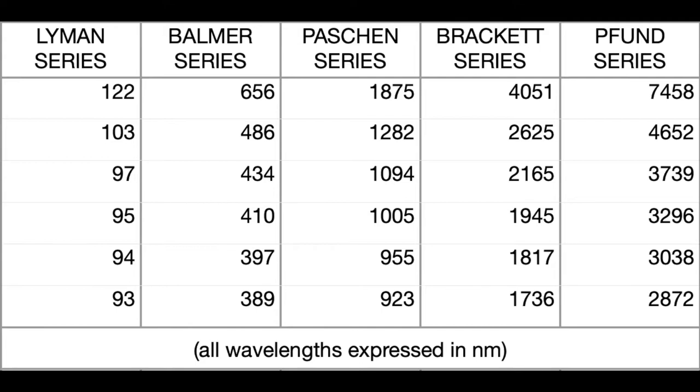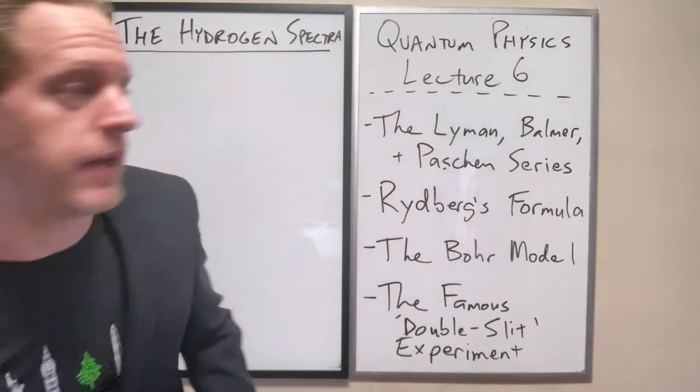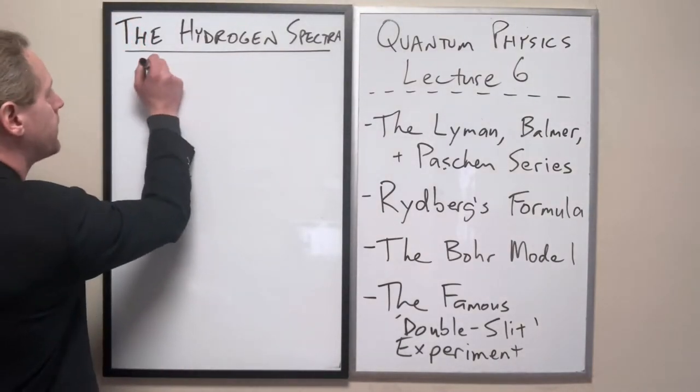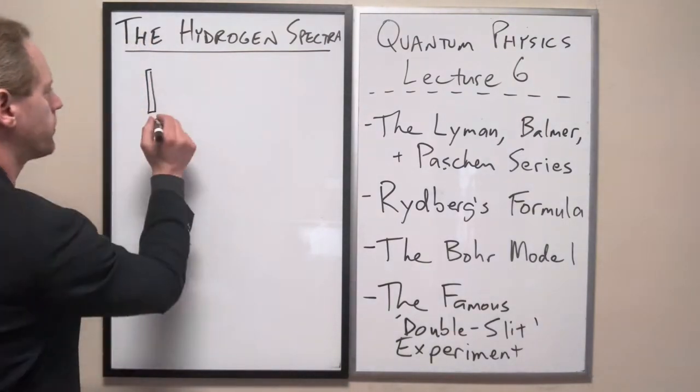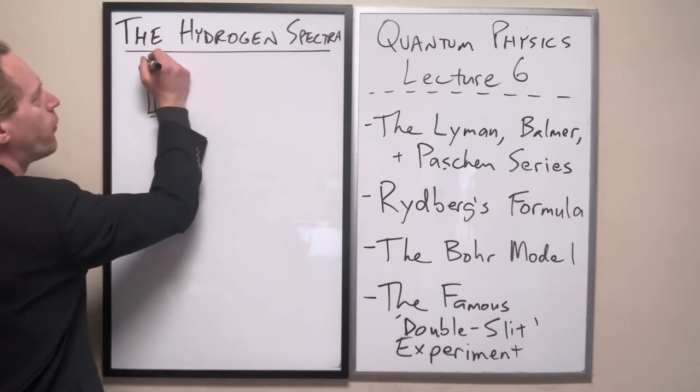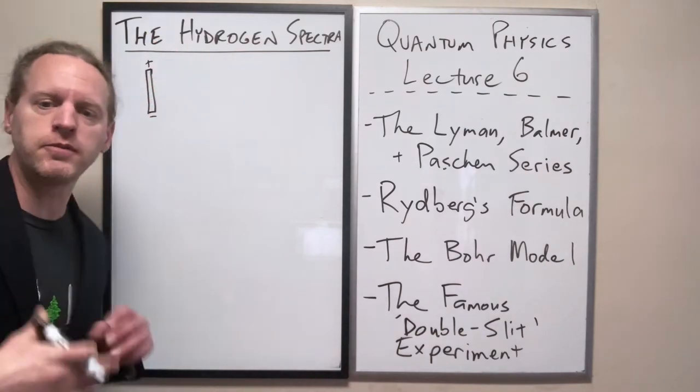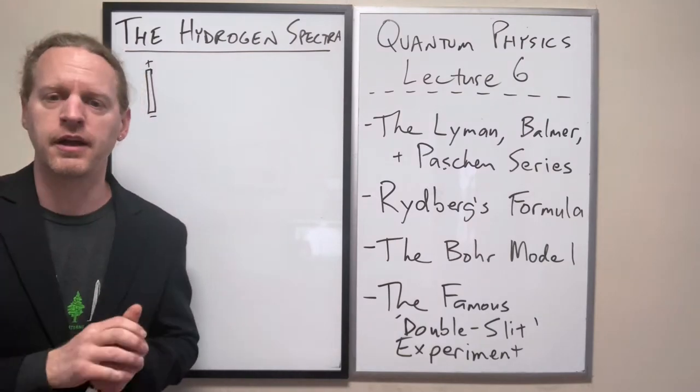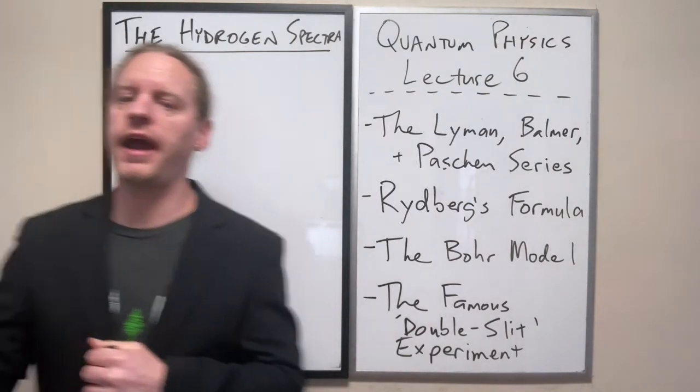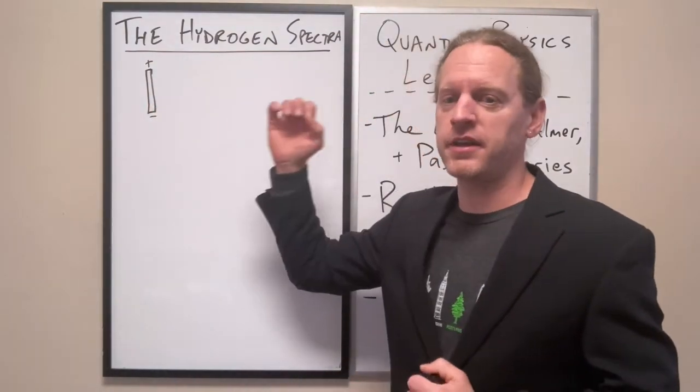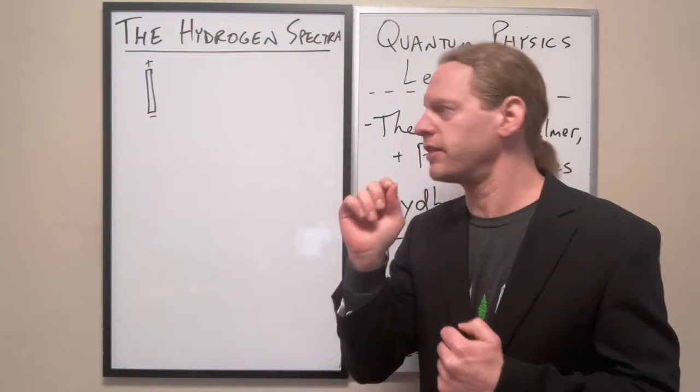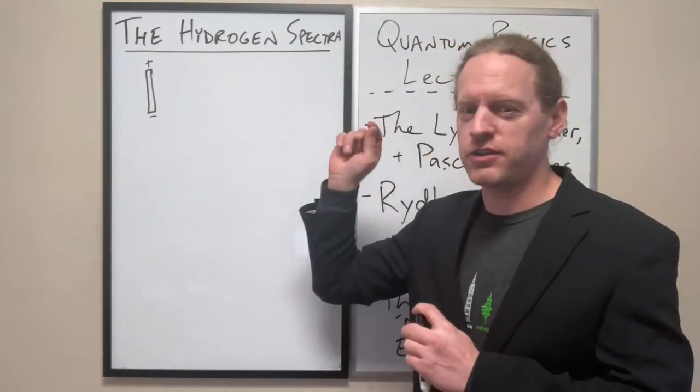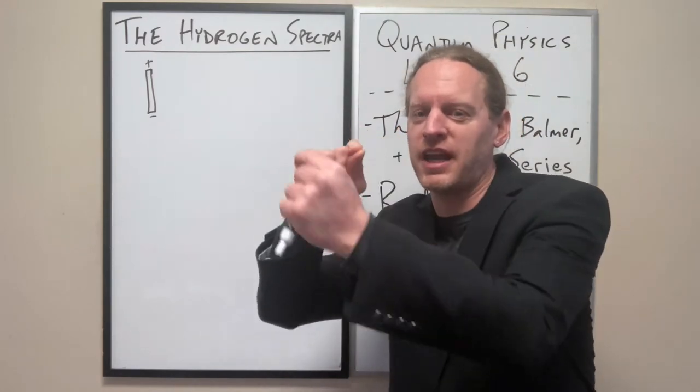And then same with the Lyman series and the Paschen series. The setup here is you have a tube of gas, and we actually do have this at Normandale. You have a tube of gas, and you put a voltage difference across that gas. It's a vacuum tube. We've evacuated all the air. We've filled it entirely with hydrogen atoms. And to be clear, we've filled it simply with individual H atoms, not H2, not molecular hydrogen. This is strictly individual protons, each proton with an electron around it.